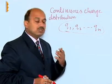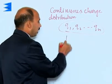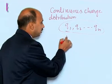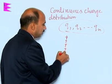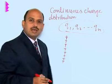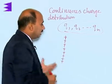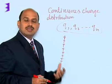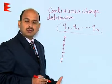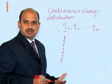Suppose the charges are distributed along a line. This is known as linear charge distribution, and in that case, we cannot take discrete nature of the charges. So, at the macroscopic level, we have to take linear charge density.